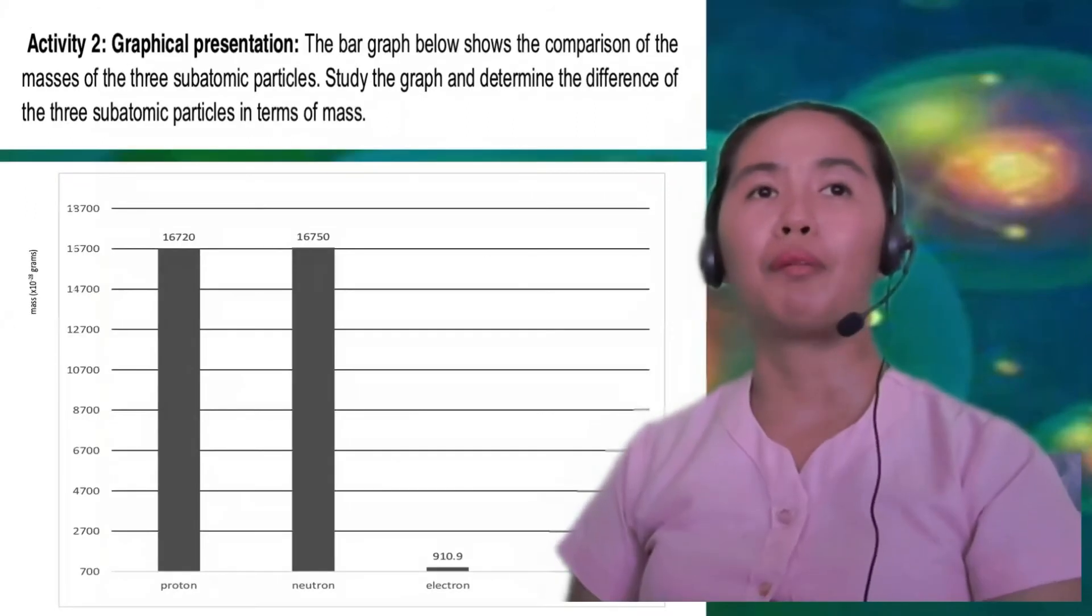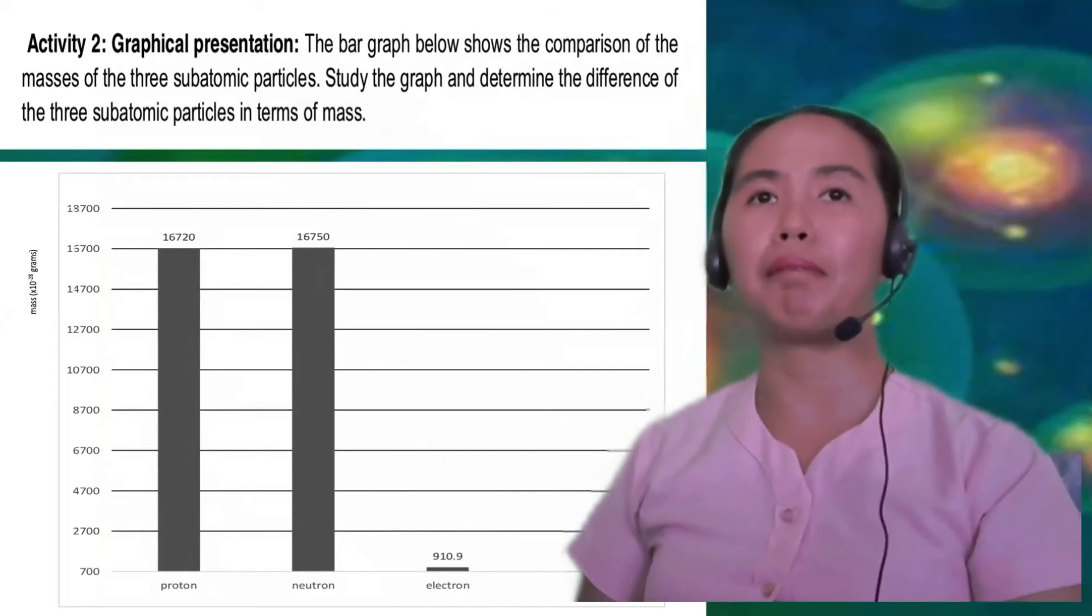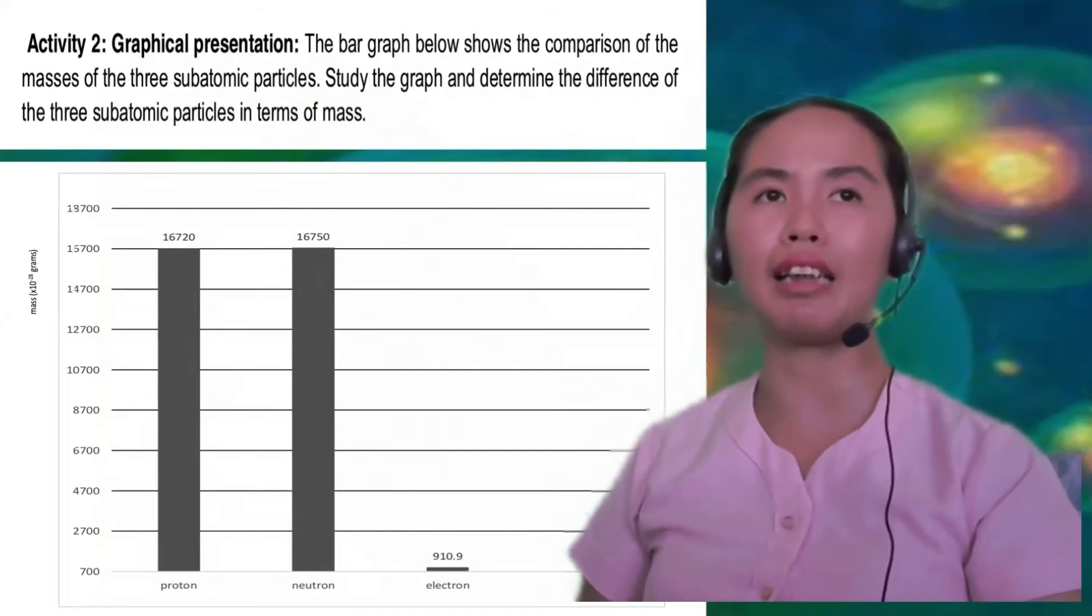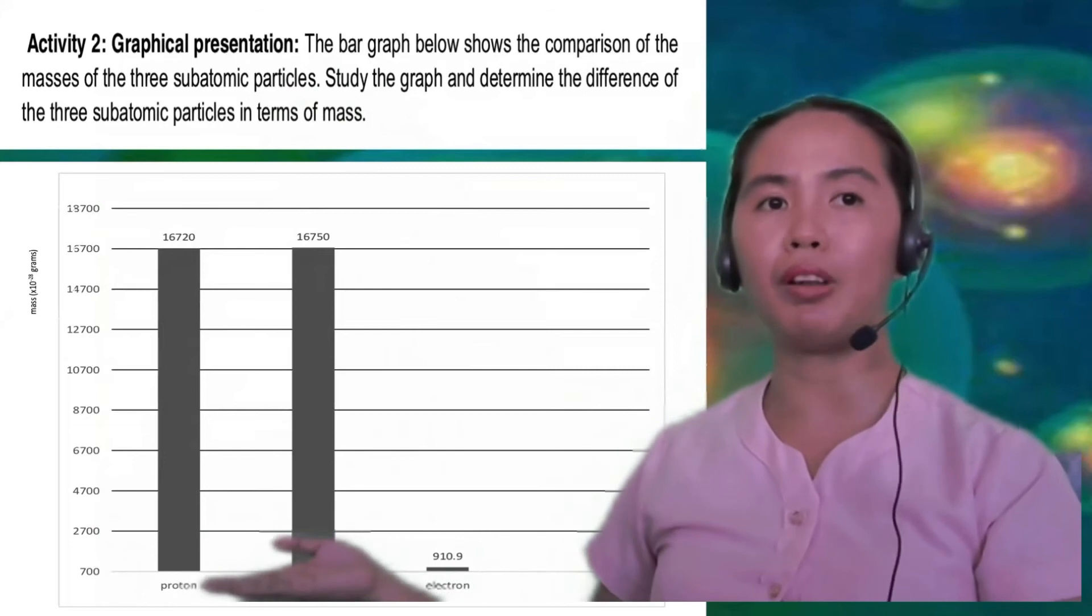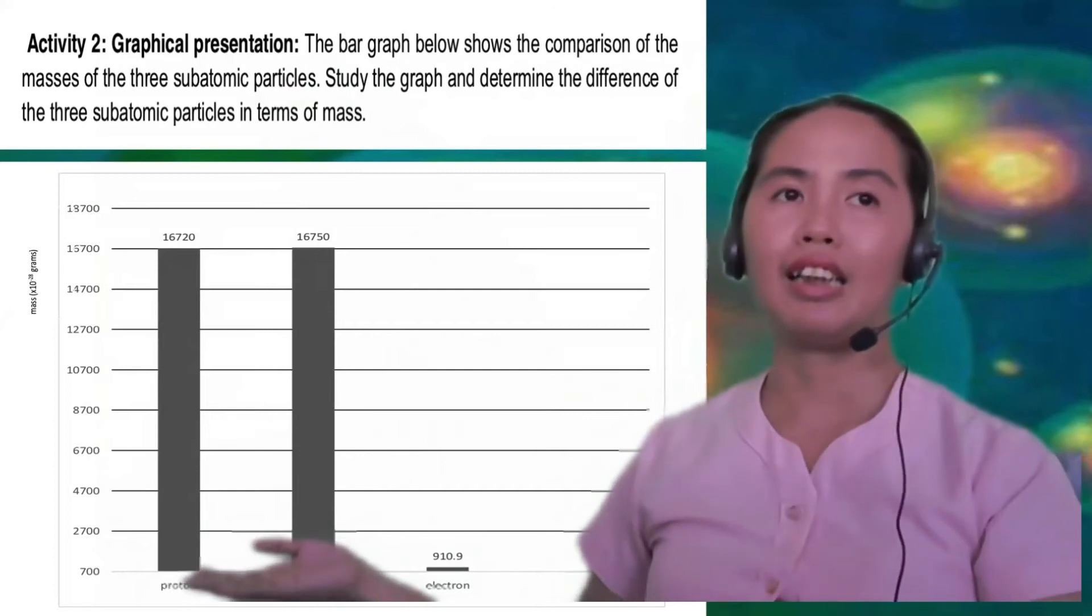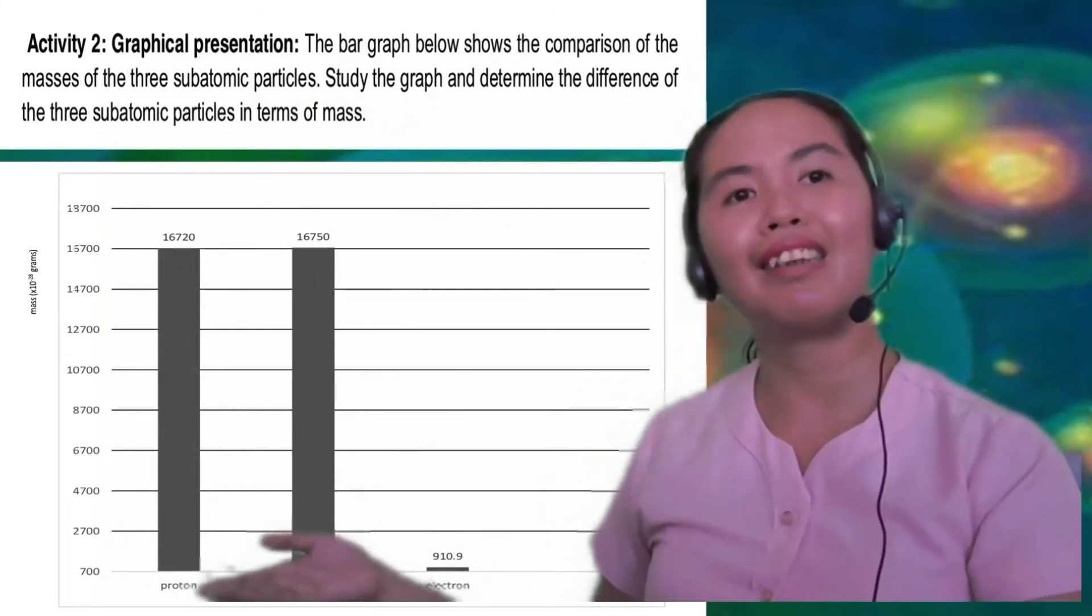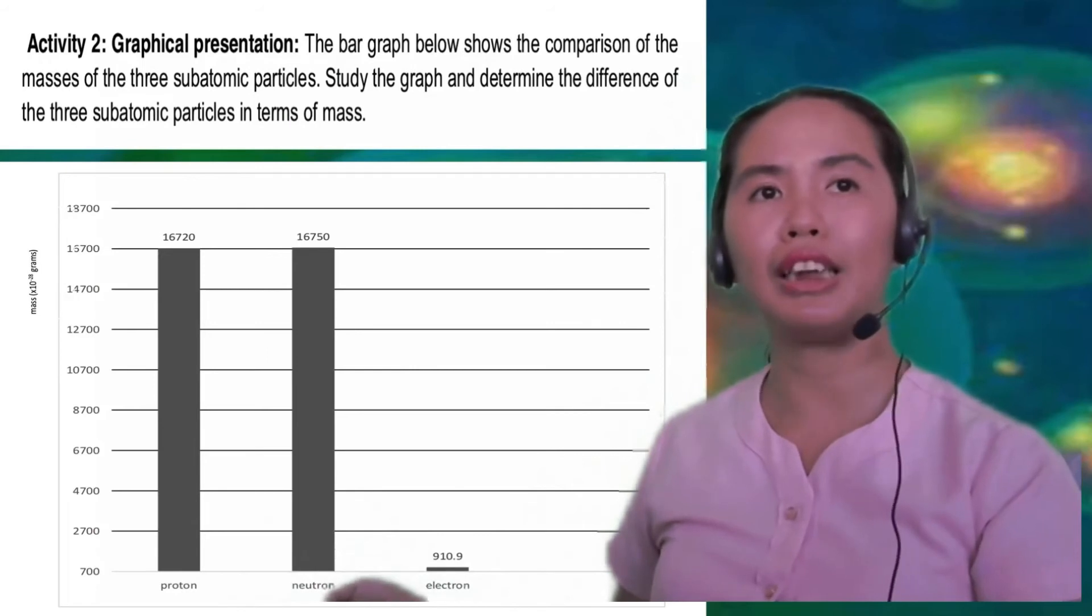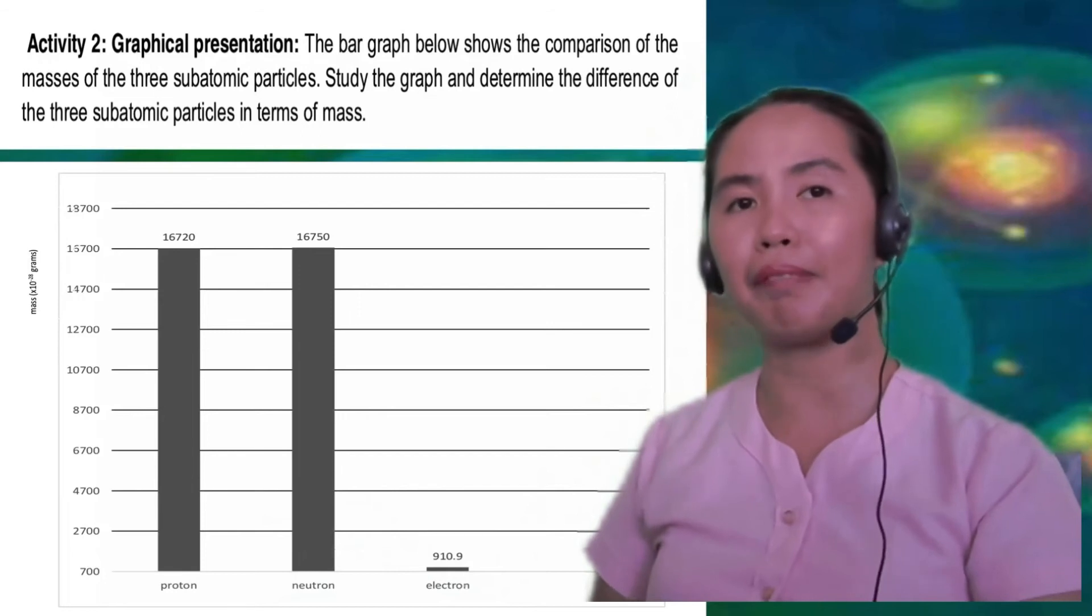For activity 2, we have this graphical presentation. The bar graph here shows the comparison of the masses of the three subatomic particles. Study the graph and determine the difference of the three subatomic particles in terms of mass. We have the first one, which is the proton. The mass is 16,720 in grams, which is times 10 to the negative 28. Then we also have neutron, which is 16,750 times 10 to the negative 28 grams. And lastly, we have the electron, which is 910.9.